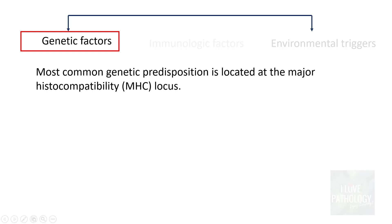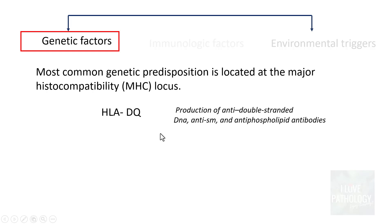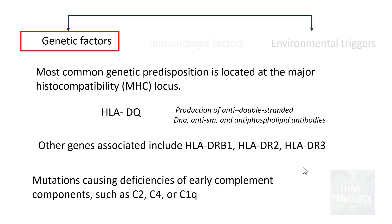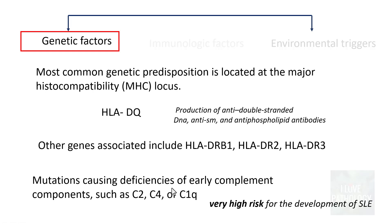The most common genetic predisposition for SLE is located at the major histocompatibility locus. For example, HLA-DQ — a defect, polymorphism, or mutation in this gene — is involved in the production of anti-double-stranded DNA, anti-Smith antigen, and anti-phospholipid antibodies. Other associated genes include HLA-DRB1, DR2, and DR3. Importantly, mutations causing deficiencies of early complement components such as C2, C4, and C1Q indicate a very high risk of developing SLE.